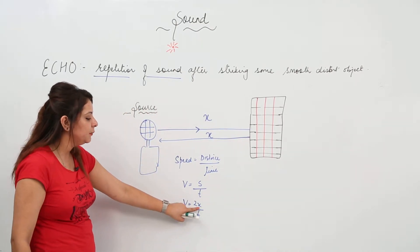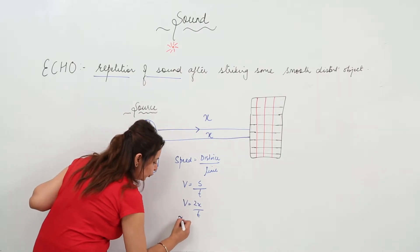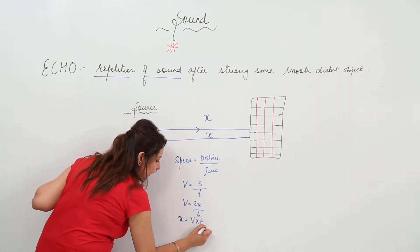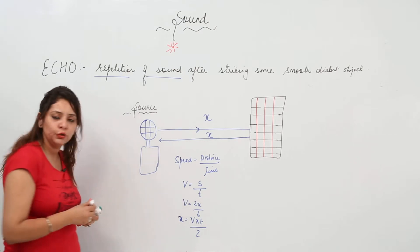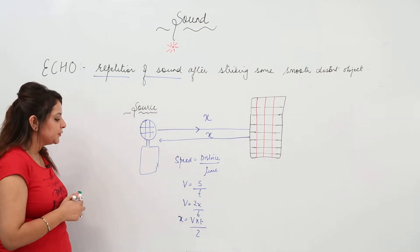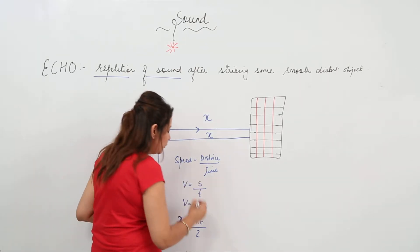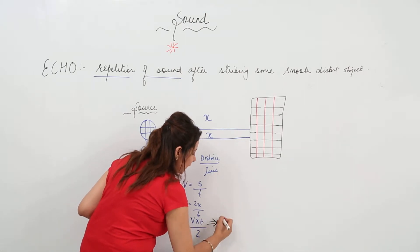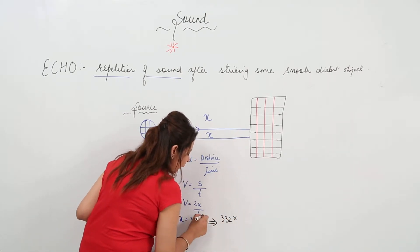Let's find the minimum distance between the source and the object required to hear an echo. We know that speed equals distance upon time, so v = 2x / t. Rearranging, the minimum distance x = v × t / 2. Substituting values: velocity of sound in air is 332 m/s.